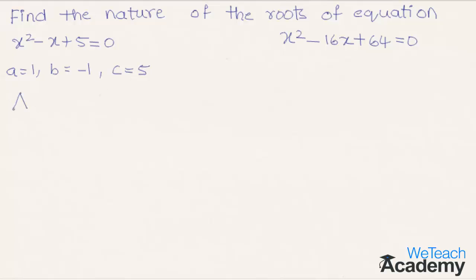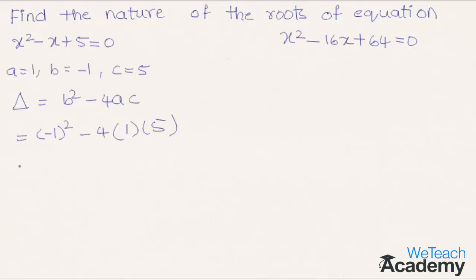Now let us find the value of delta, that is b squared minus 4ac. By substituting the values we get minus 1 whole square minus 4 into 1 into 5. Simplifying, minus 1 whole square is 1, and 4 into 5 is 20. So 1 minus 20 gives us minus 19.